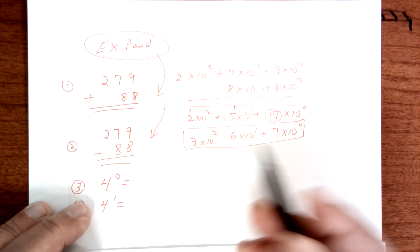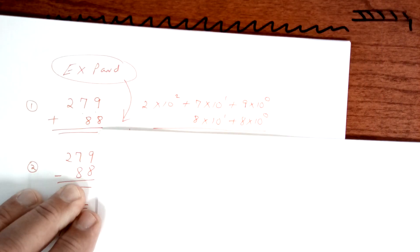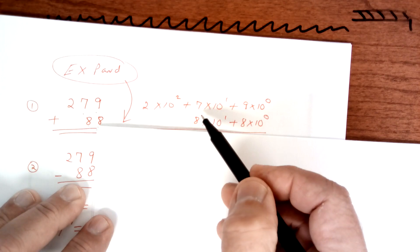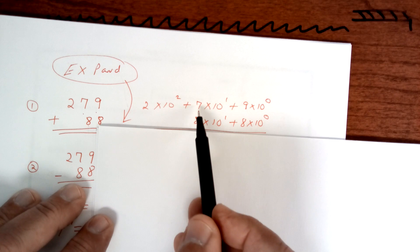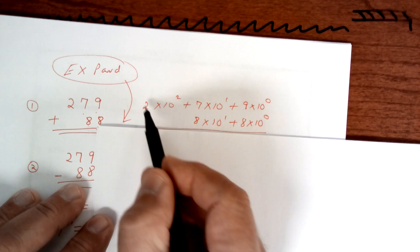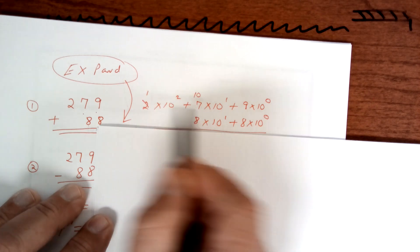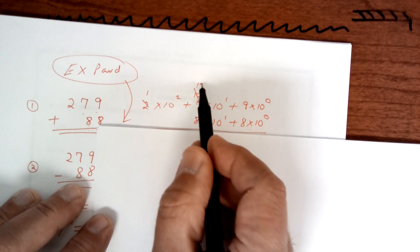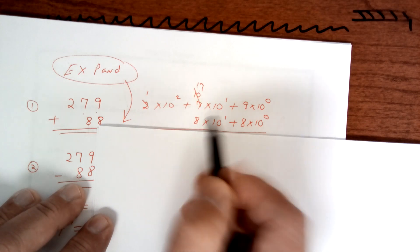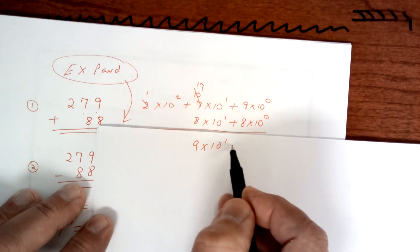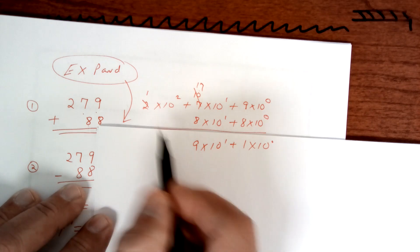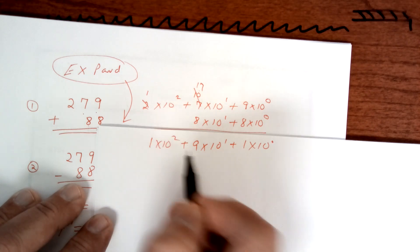When you subtract it, well let's talk about that. When you subtract here, you have to borrow because you don't have enough here. So here you can't subtract 8 from 7, so you're going to borrow one here but you're going to add 10 because you're going down. So that's going to be 17, and then 17 minus 8 gives you 9 times 10 to the first power. 9 minus 8 is going to be 1 times 10 to the zero power, and then this one is going to be 1 times 10 to the second power. And that's how you subtract it.